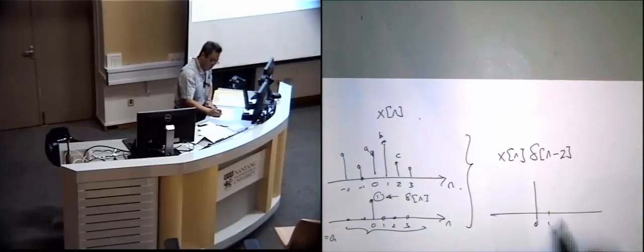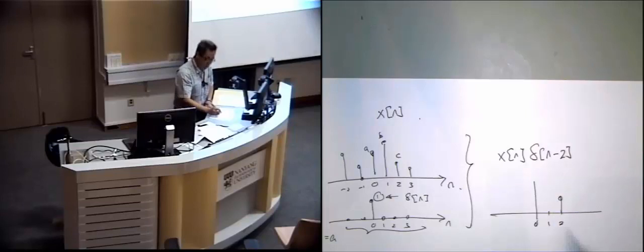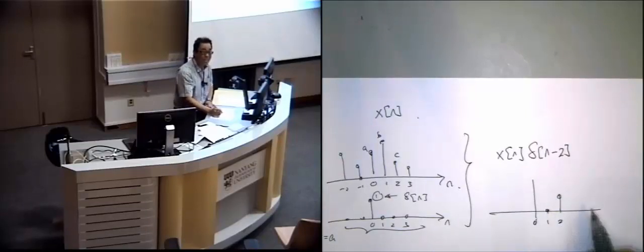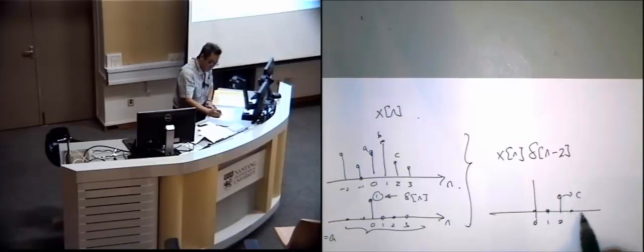C will come out. So 0, 1, 2, and C will come out. But C is a function. It's not a point C. It is a function that what? It looks like like this. Okay?